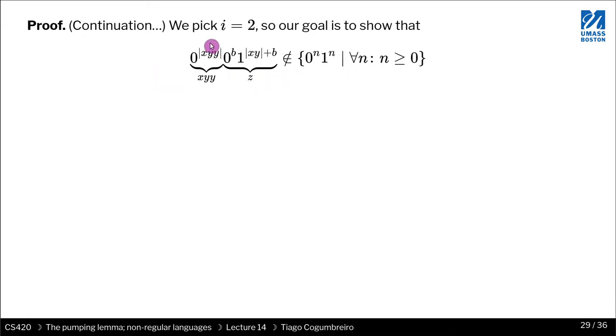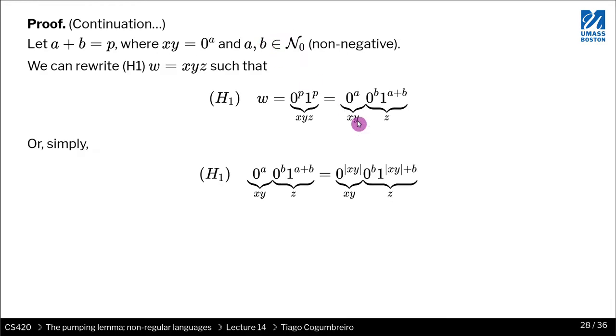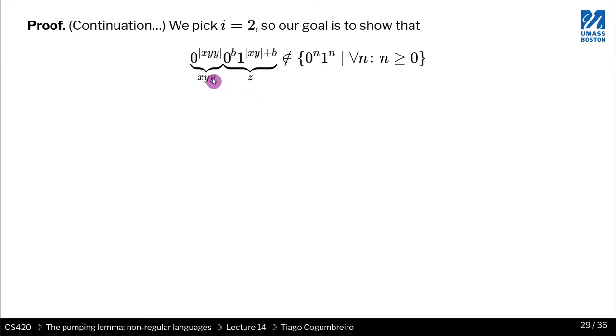So we're going to show now that if we pick i to be 2, then the string on the left that has two y's does not belong in L₁. So note that now I have, because I duplicated the y's, now I have x—the number of zeros to be the length of x, y, y. And the remaining z is the same, z remains the same. So it's going to be exactly what we had before here in this portion. So this is the same, and here the only thing we added was a number of y that consists of only zeros. So we represent that using the power.